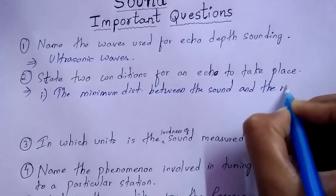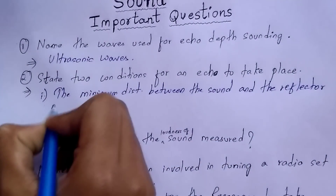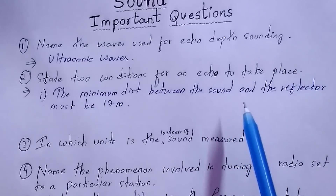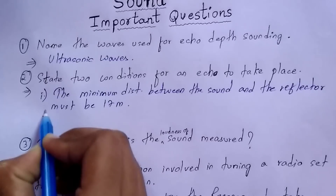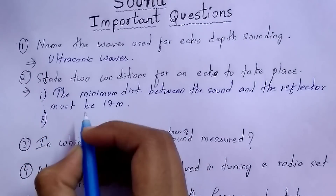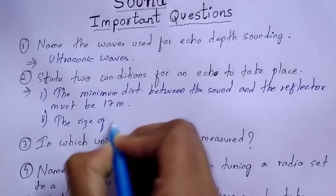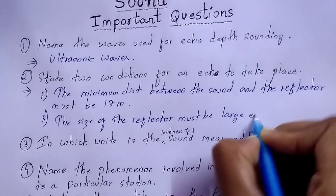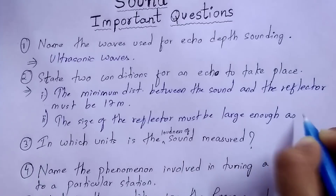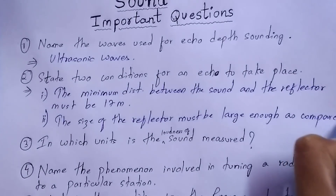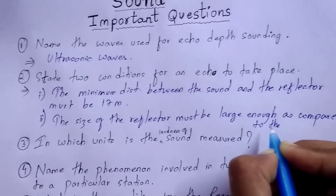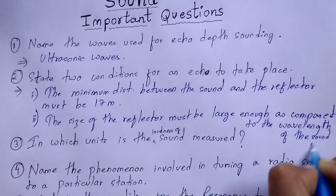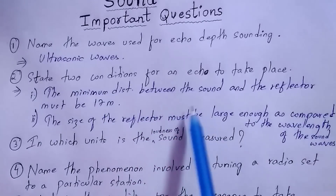The first condition is that the minimum distance between the source of sound and the reflector must be 17 meters. The second condition for an echo to take place is that the size of the reflector must be large enough as compared to the wavelength of the sound wave.